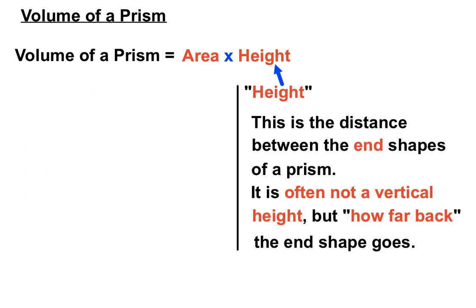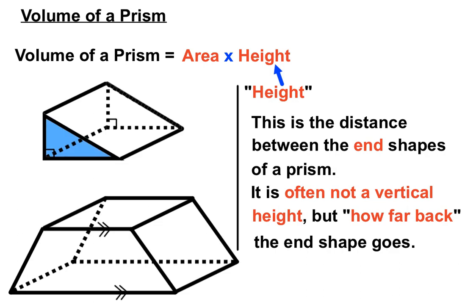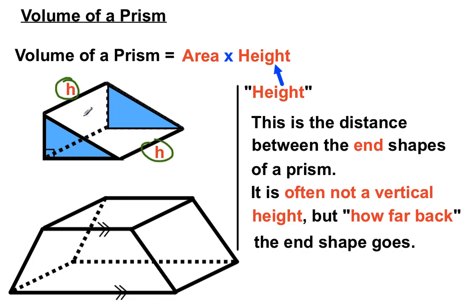Now let's illustrate the height idea. The height in a prism is actually the distance between the two end shapes. I've made the two end shapes of the triangular prism blue. The height we're measuring is the distance between those end shapes — so it's often not a vertical height, but how far back you have to go to get to the other end. It can be measured along the bottom edge, or even along a back edge.